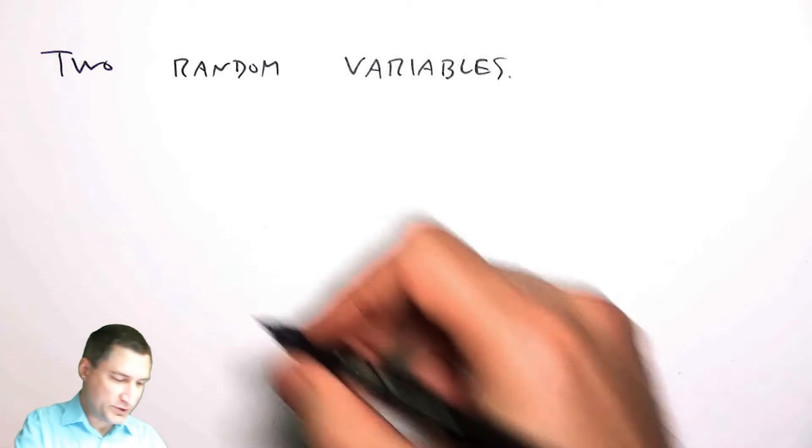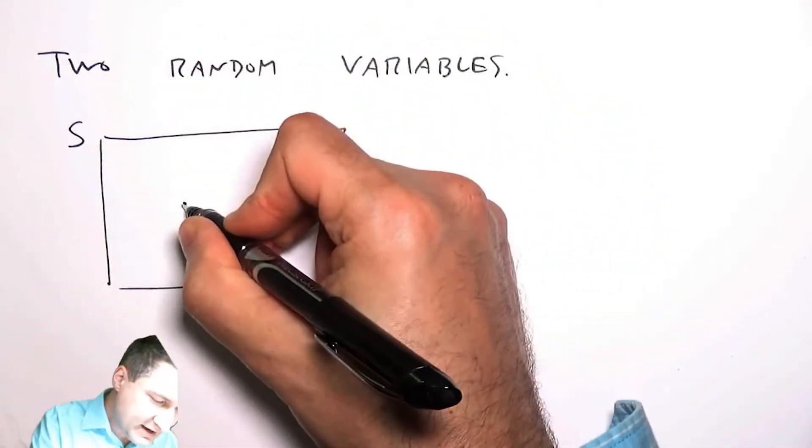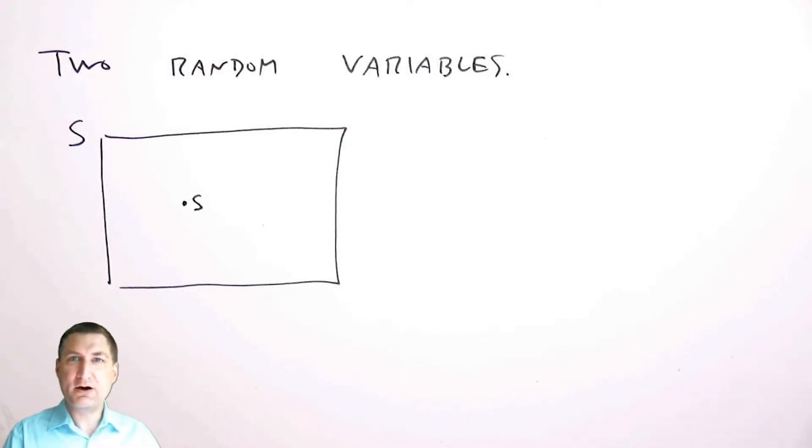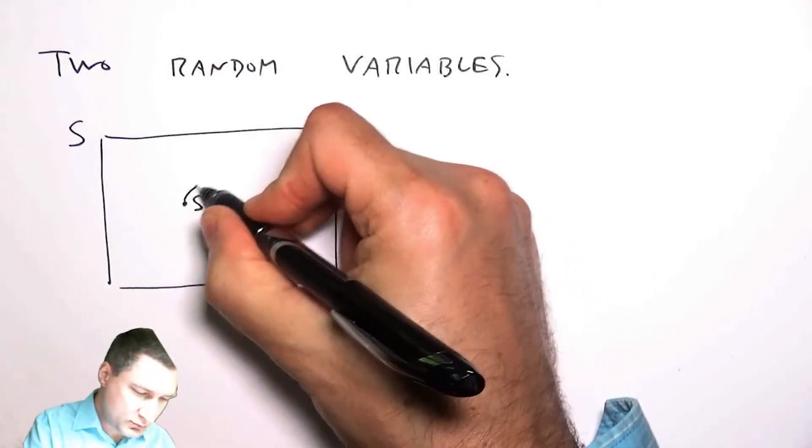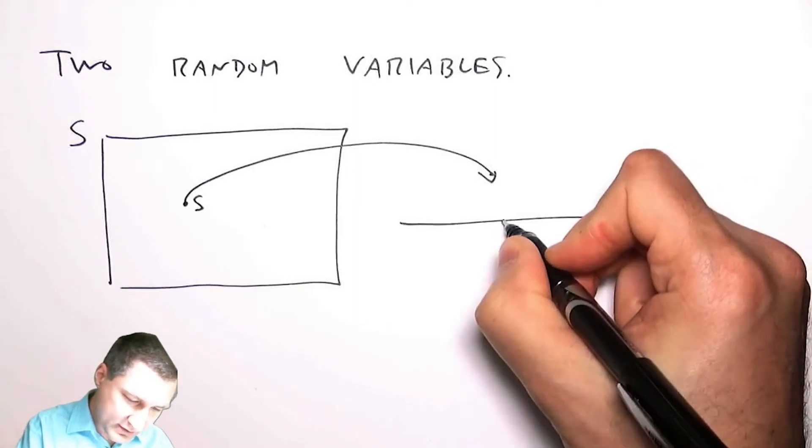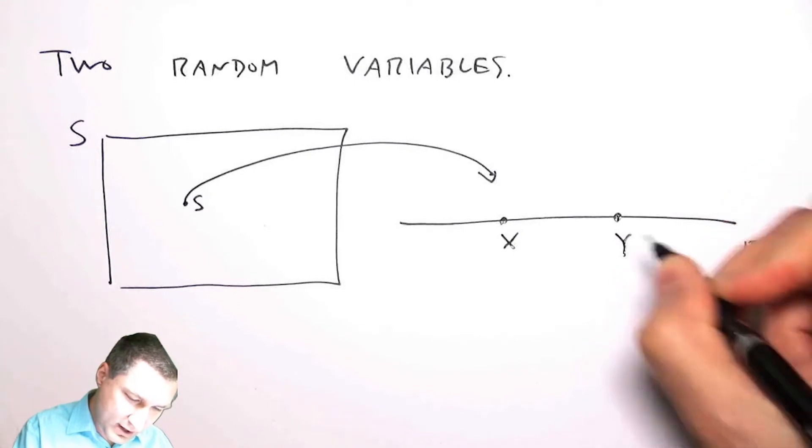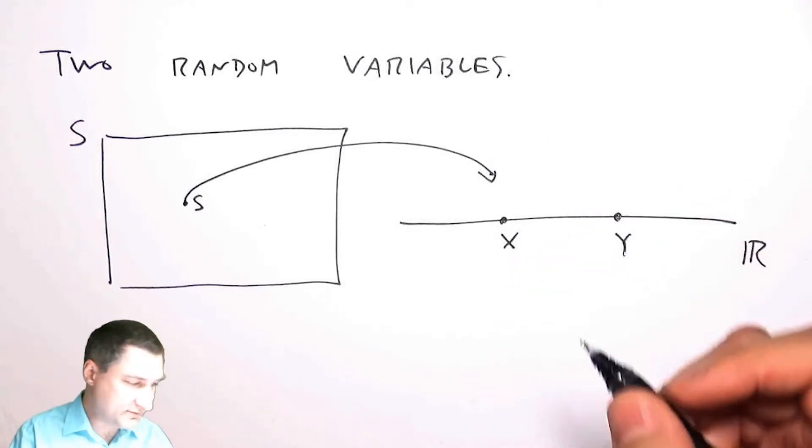The setup is very much the same. We do some sort of experiment, we have a sample space, we get an outcome in the sample space, and now that outcome produces two numbers on the real line instead of just one. So I get basically an outcome x and outcome y, and each of these is a random variable.